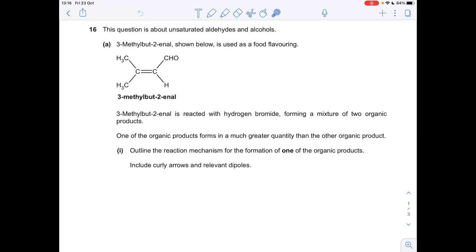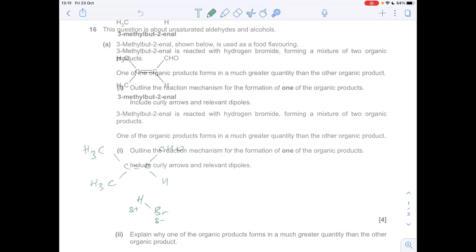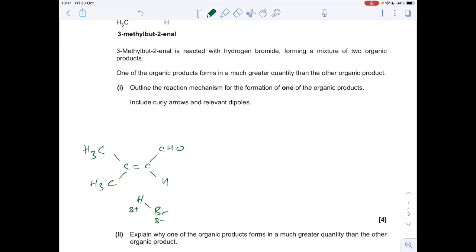So part A, we've got to outline the reaction mechanism for the reaction of this substance here with hydrogen bromide. Obviously there's two possible products because the hydrogen can either go there or there. So I'll show both. Okay, so we've got a dipole on the HBr molecule due to the difference in electronegativity. And a pair of electrons from the pi bond are going to be attracted to the slightly positive hydrogen. And that's going to repel the pair of electrons in the HBr bond completely onto the bromine. And it'll break that bond by heterolytic fission.